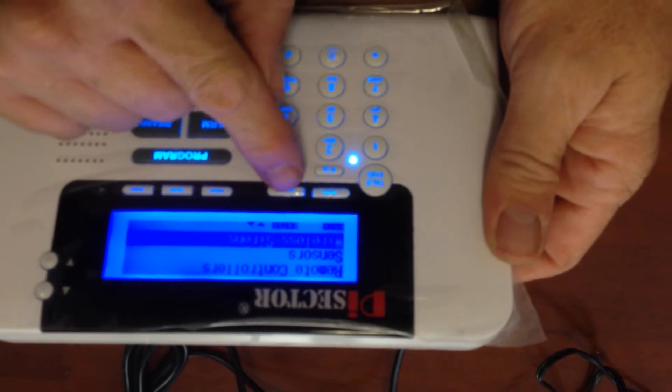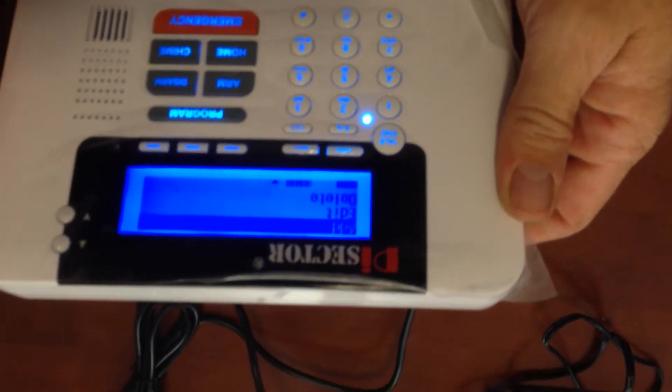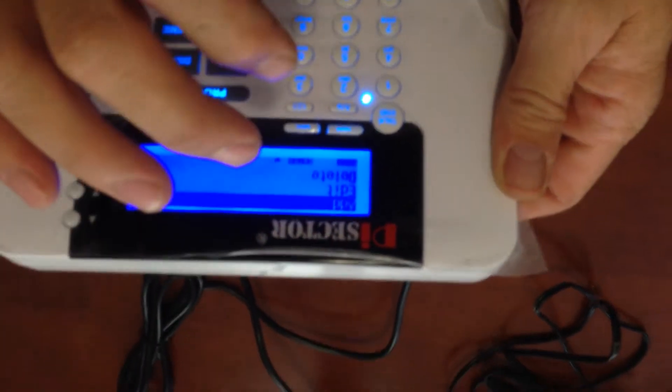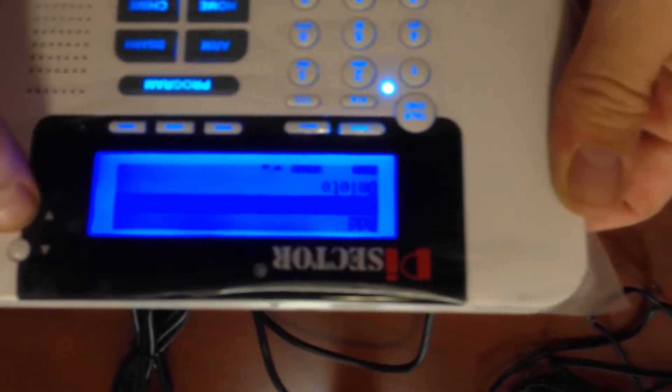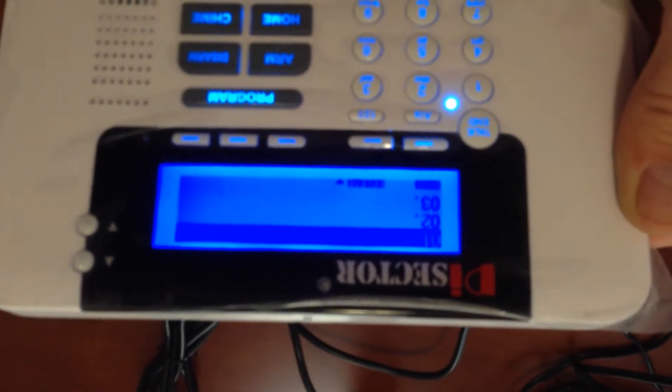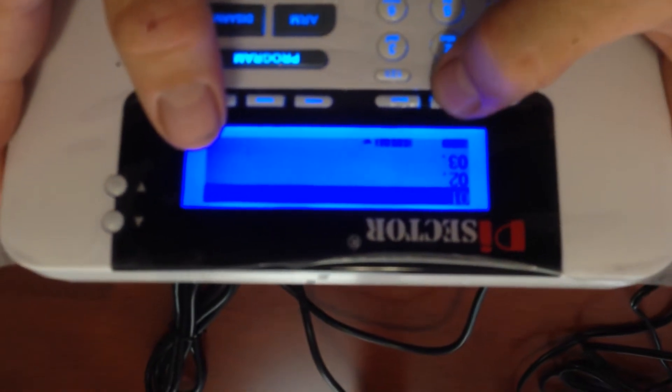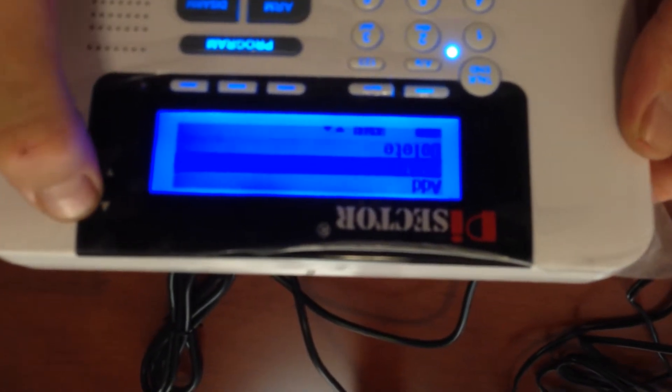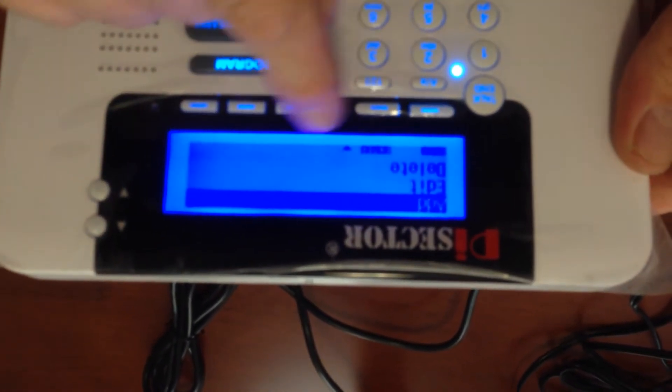Press enter and we're going to check and see if there's any sirens already in the system. There shouldn't be, but we're going to check. You just go down to delete and press enter, and as you see, there's no siren on any of the three. So we will go back. We're going to add one. Go up to add and enter.